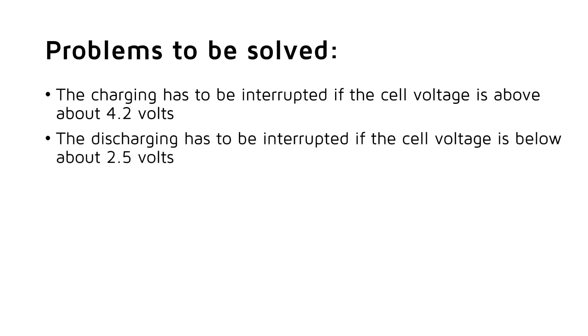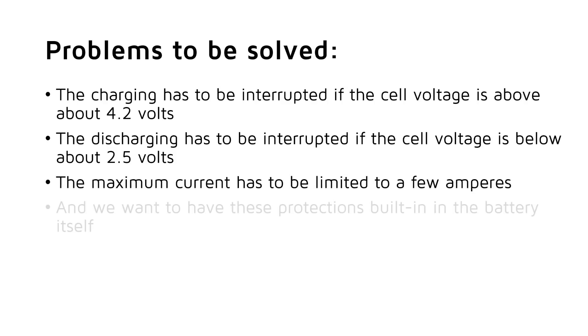What are the problems we have to solve today? The charging has to be interrupted if the cell voltage is above about 4.2 volts. The discharging has to be interrupted if the cell voltage is below about 2.5 volts. The maximum current has to be limited to a few amperes. And we want to have these protections built-in in the battery itself.